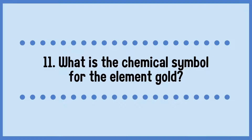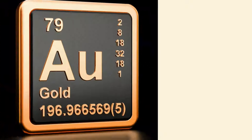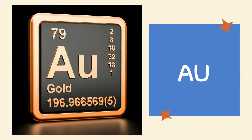What is the chemical symbol for the element gold? The chemical symbol for the element gold is denoted by the letters Au.